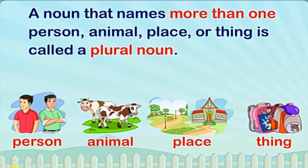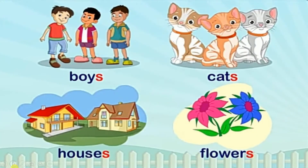A noun that names more than one person, animal, place or thing is called a plural noun. Nouns that are more than one in number are called plural nouns. For example, boys, cats, houses, flowers. There are more than one boys, more than one cats, more than one houses, more than one flowers. So, it's a plural noun.